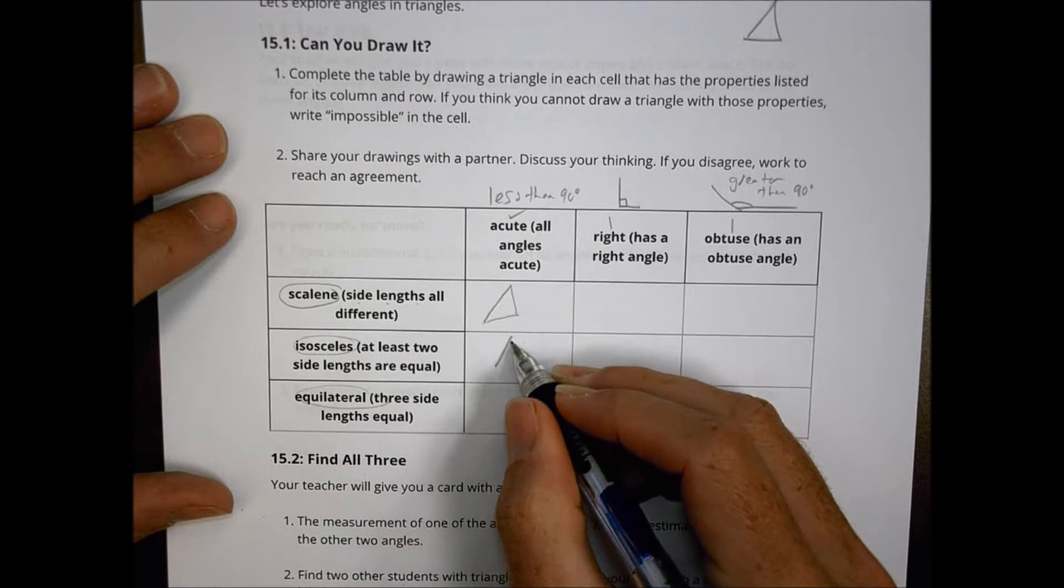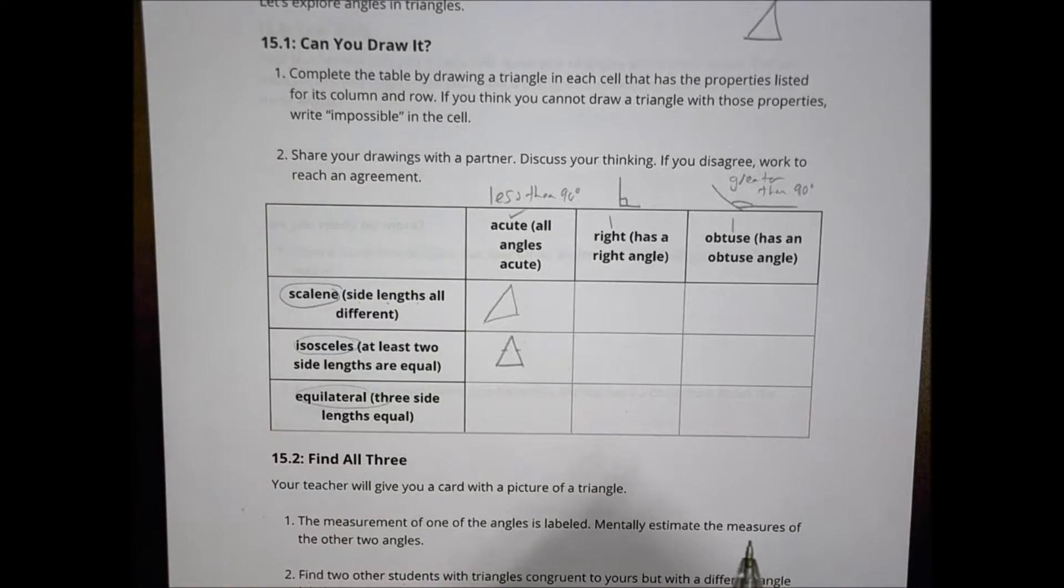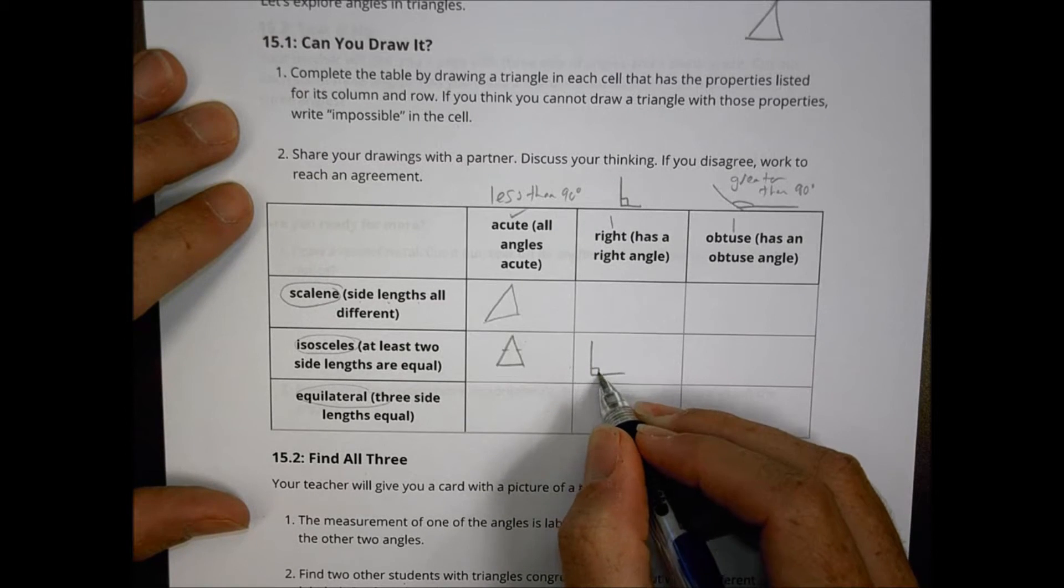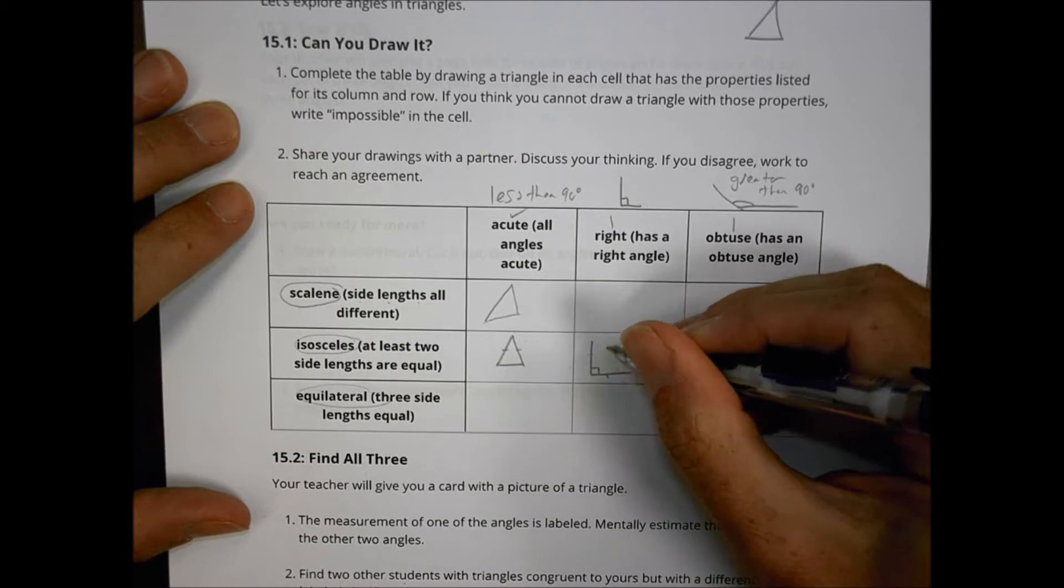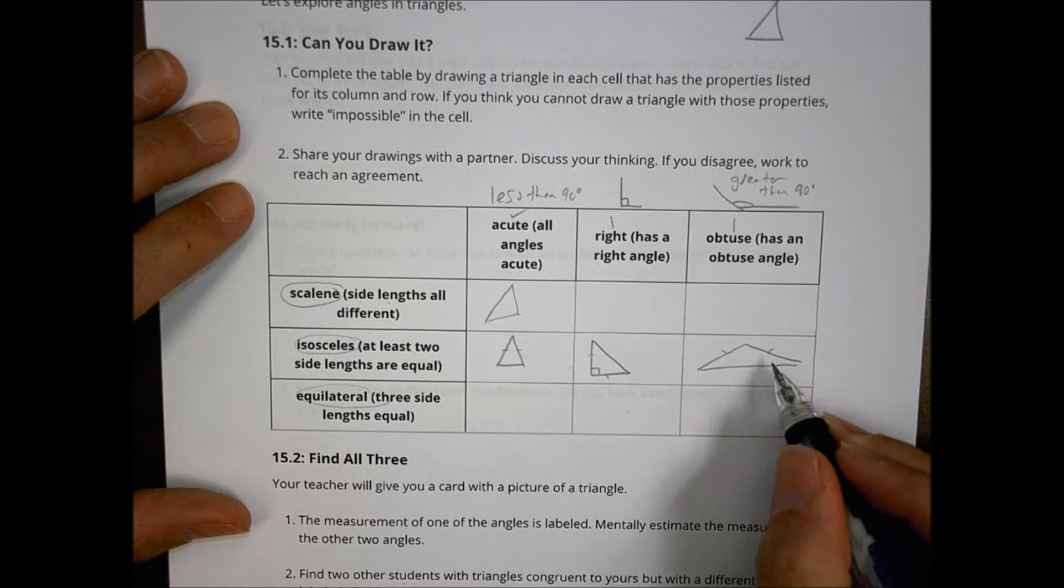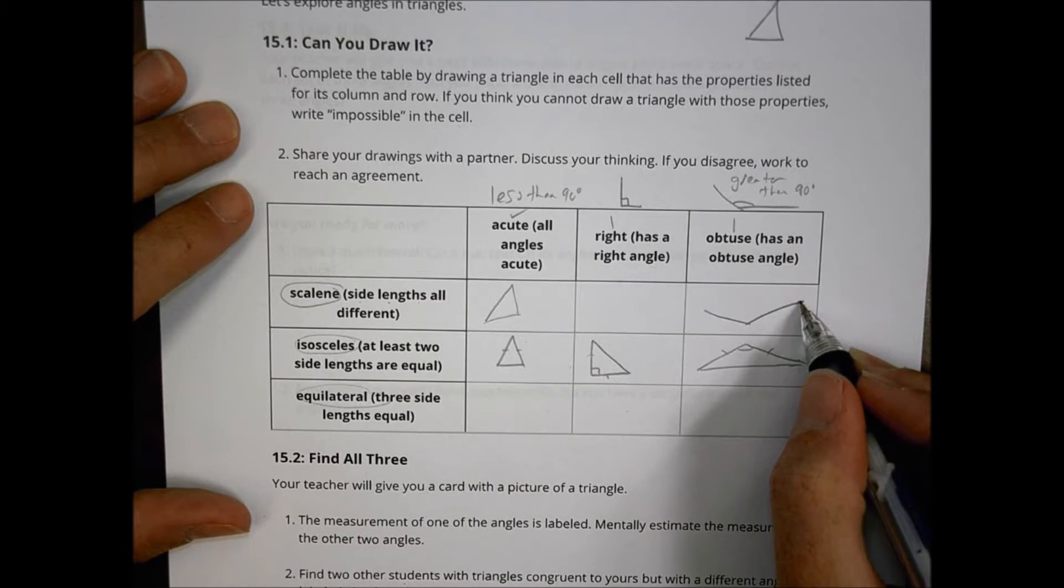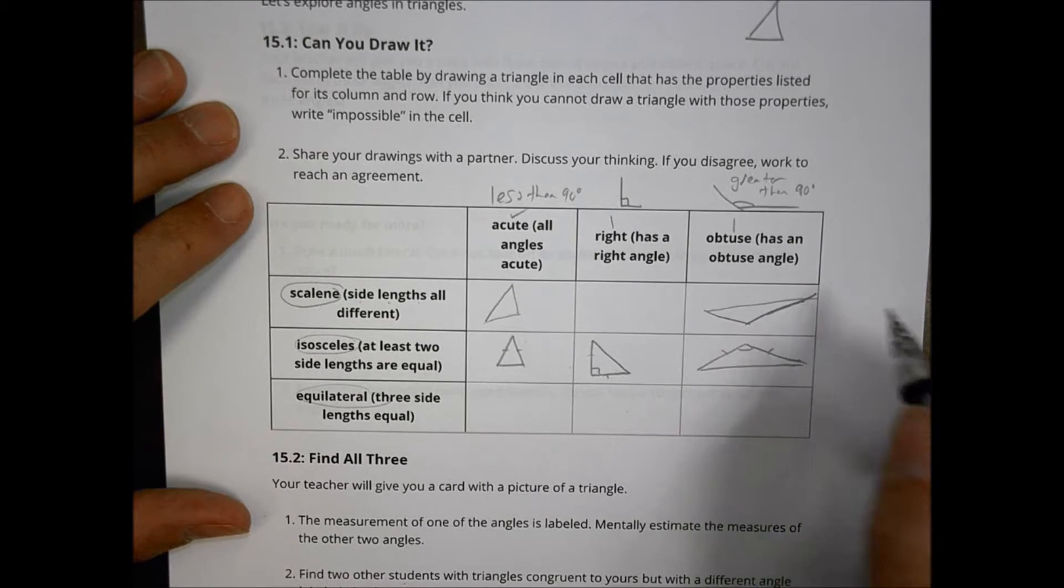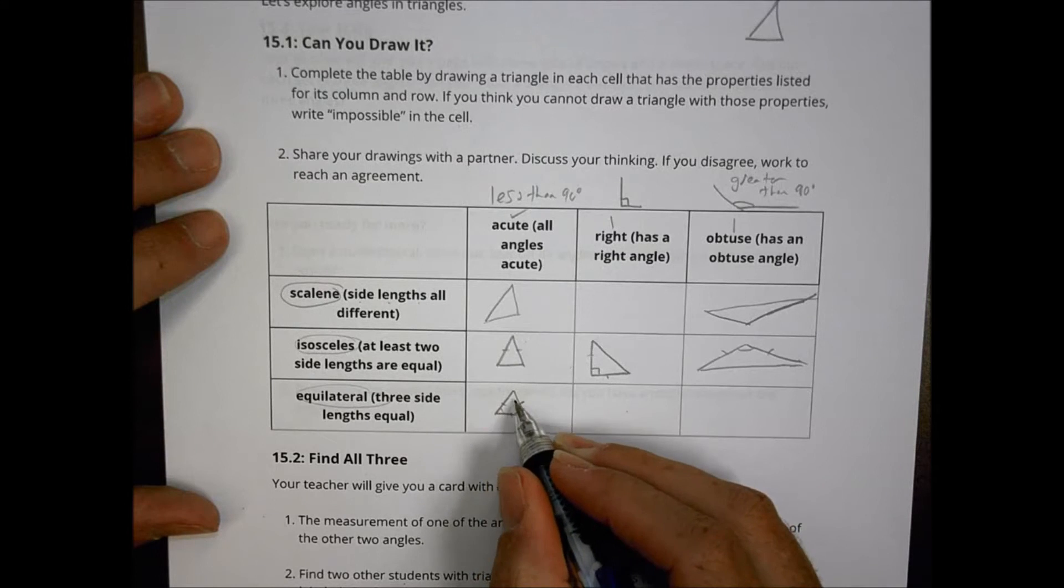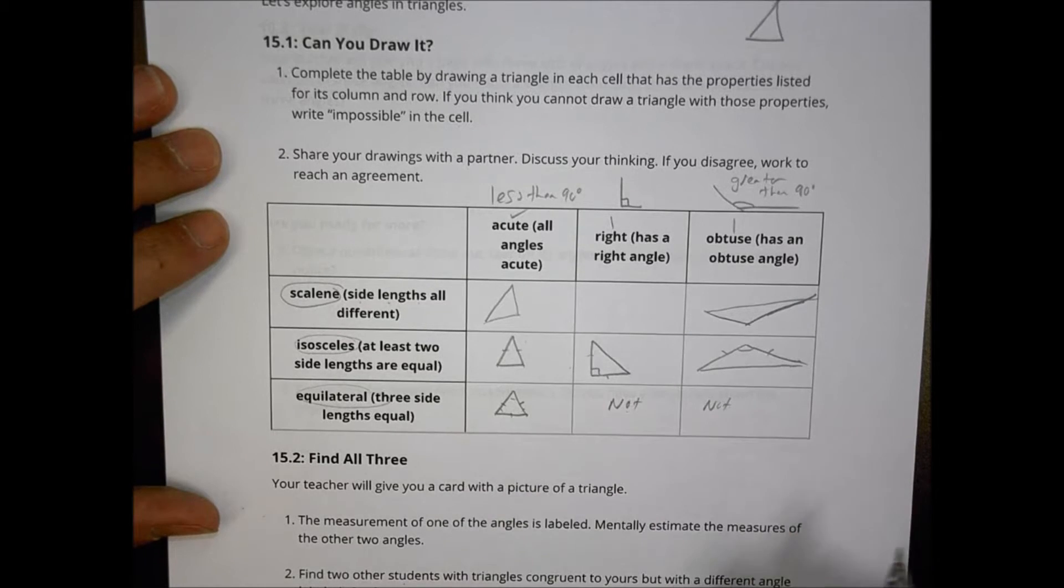And so you did some different drawings here. Your isosceles, perhaps, was like this with a scalene there. Isosceles means the two sides are the same. You might have had a right triangle one like so, and these match, and that becomes your base. And you can even do an obtuse one here like so to make an isosceles triangle where those sides match. For equilateral, there's only one way to do that equilateral one where they're all going to be the same. They're all acute. There's no way to make an equilateral right triangle. It's not possible.